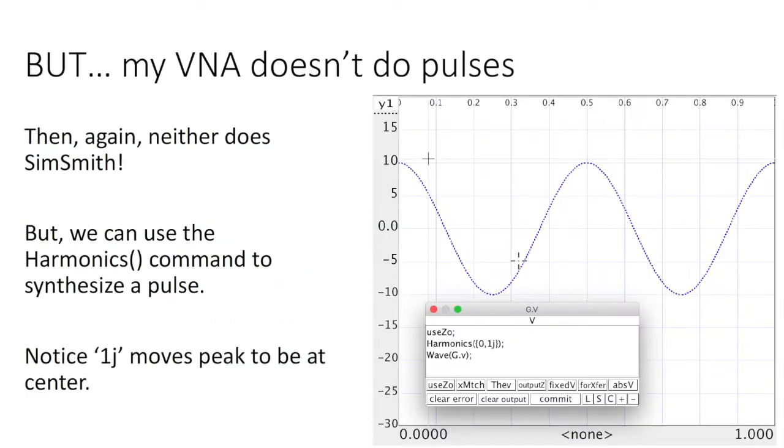Most of our VNAs don't do pulses. Then again, neither does SimSmith. But we can use the harmonics command to synthesize that pulse. The first thing to notice is I've moved the sine wave to be centered at the middle of the display. And in order to do that, I had to phase shift the fundamental. In this case, I phase shifted it by 90 degrees by saying that the amplitude of the fundamental harmonic is 1 and its angle is j, or 90 degrees.